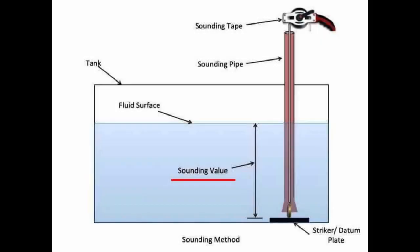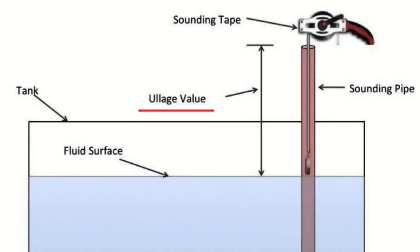There are two options to complete the measurement. By the sounding method, where the measuring tape must touch the bottom of the tank, finding the sounding value. Or by the ullage method, where the measuring tape must touch the surface of the fuel, finding the ullage value. Both methods are going to tell you how many cubic meters are inside the tank, and of course the results are exactly the same.